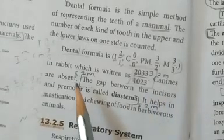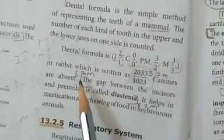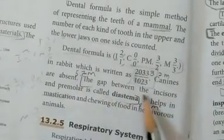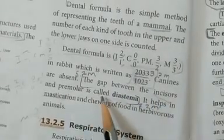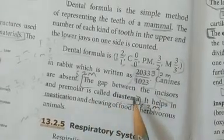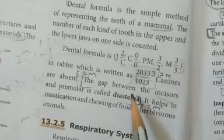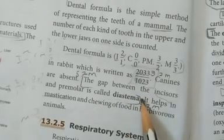Canine teeth are absent in the rabbit. The gap between the incisor and premolar teeth is called the diastema.